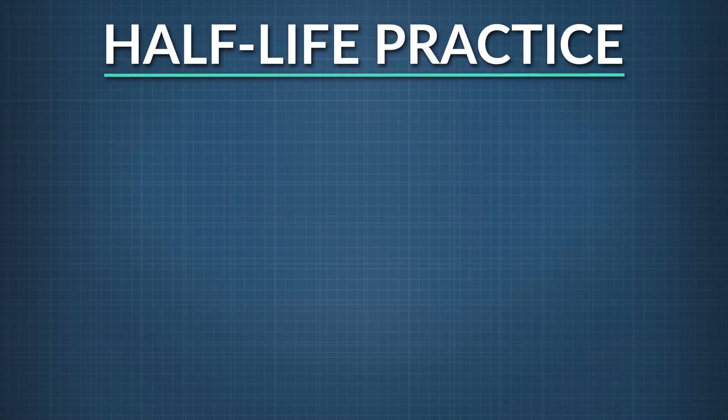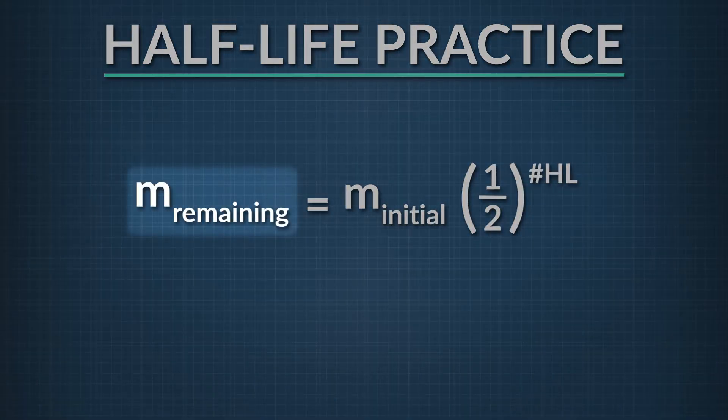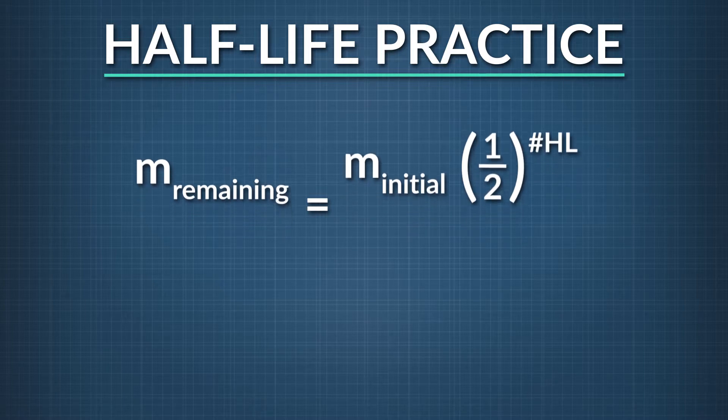To answer this question, we'll need to figure out the half-life of the unknown sample. Let's start with our relationship between the starting and ending sample mass. The sample mass remaining equals the mass at the start times one-half raised to the number of half-lives passed. We want to solve for the number of half-lives. We can rearrange this equation to isolate one-half to the number of half-lives on one side by dividing by m-initial.